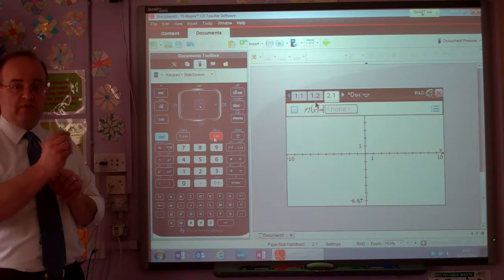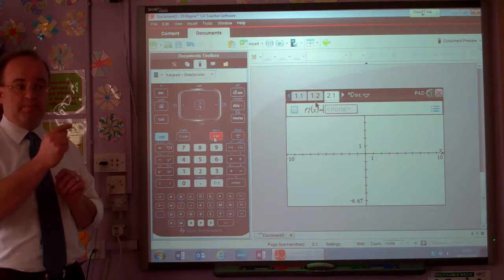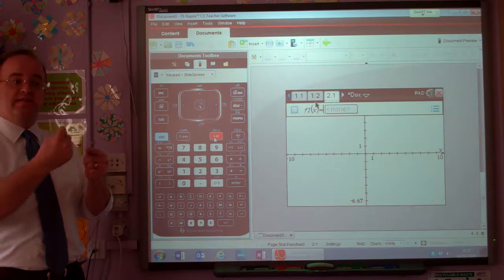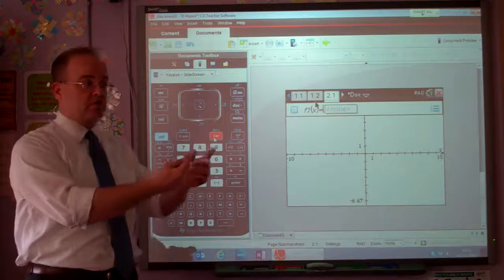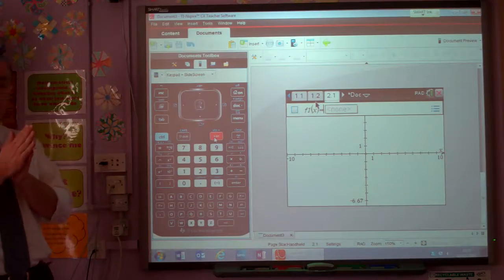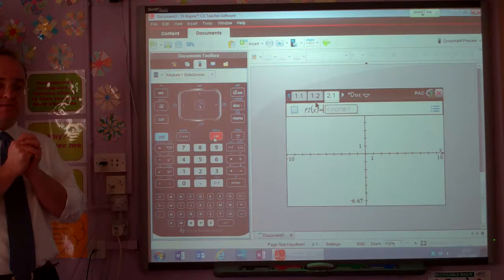Doing it in terms of a document is really, really useful because one of the best things about this calculator is that it links the graphs to the calculations to the spreadsheet to the data and statistics bit. Right, should we stop down with this bit?